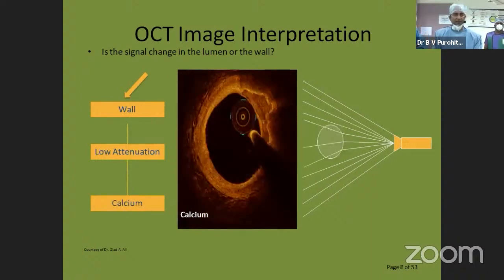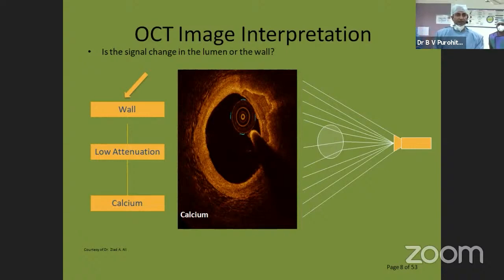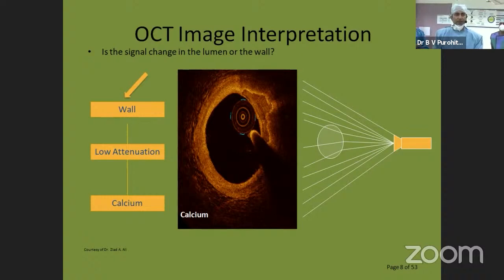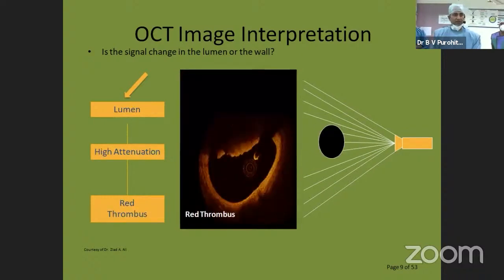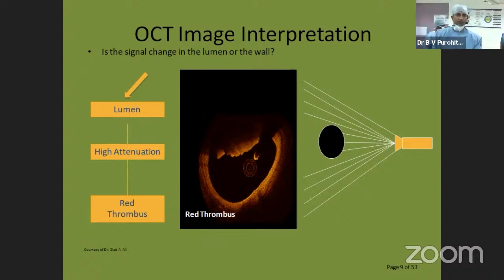A calcific plaque: between 12 o'clock and 3 o'clock you can see an almost map-like pattern — that is dense calcification. This is superficial calcium almost touching the intima, characterized by low attenuation with a very clear, demarcated line. A red thrombus shows high attenuation — you can see something protruding inside the lumen around 9 to 12 o'clock, and you cannot see clearly beyond it.